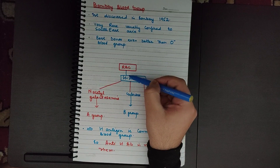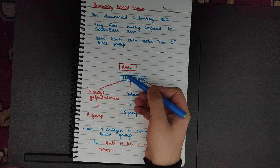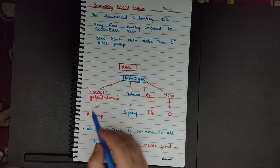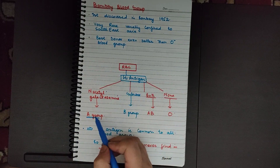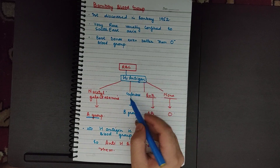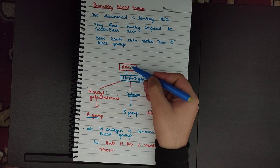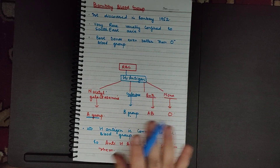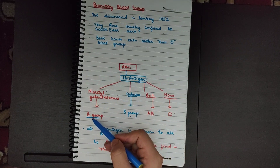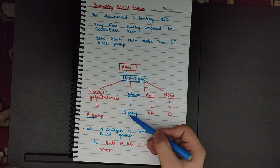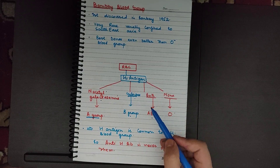The H antigen is present in all blood groups — whether A, B, AB, or O. If we add N-acetyl galactosamine to the H antigen, it becomes the A blood group. If we add galactose to the H antigen, it becomes the B blood group. If we add both N-acetyl galactosamine and galactose to H antigen, it becomes the AB blood group.